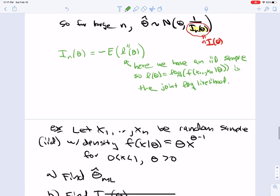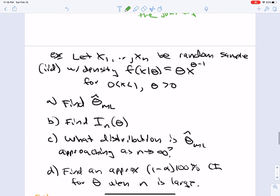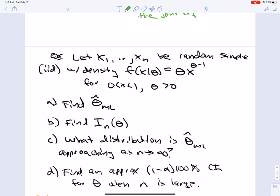So we're going to have X1 to Xn, a random sample, IID, with density theta X to the theta minus one for X between zero and one, and theta positive. So there's going to be four tasks to do here. We're going to find the ML estimator, find the sample Fisher information, what distribution is the ML estimator approaching as N goes to infinity, and find an approximate one minus alpha 100% CI for theta when N is large. So I suggest you shut off the video and try and work these out now.